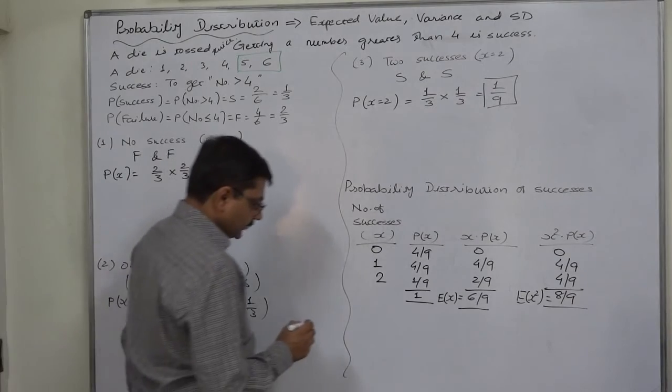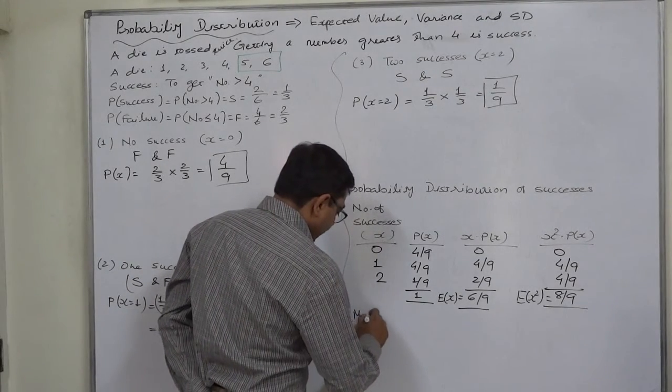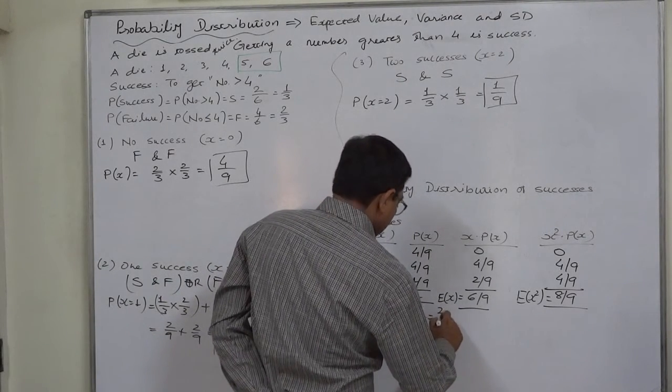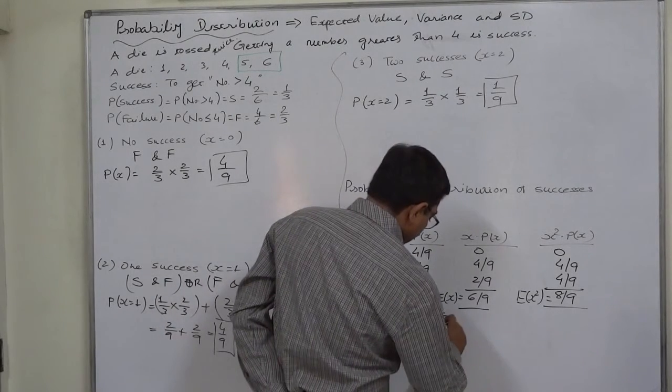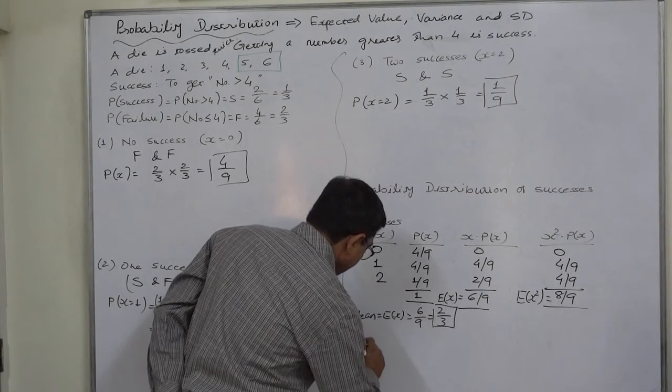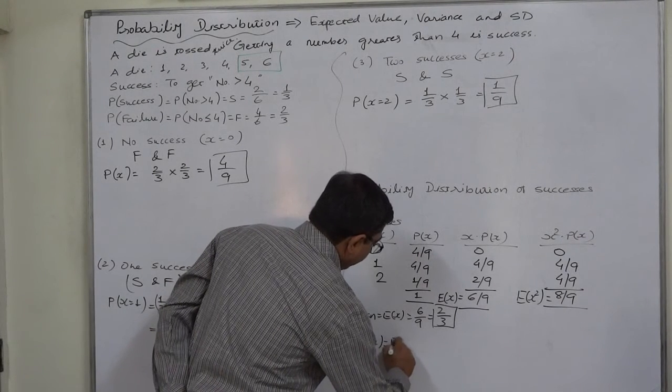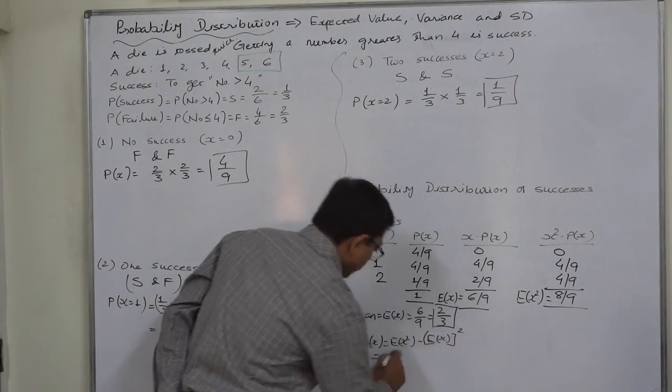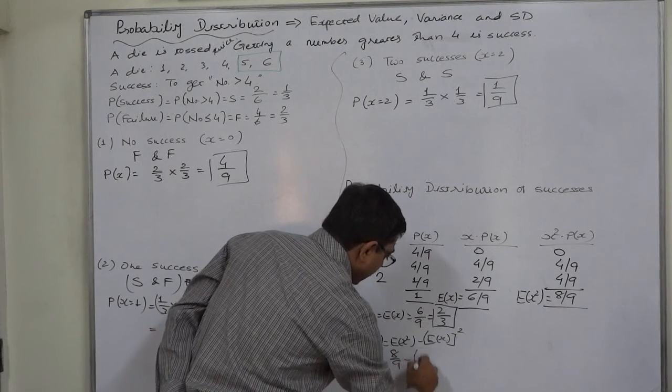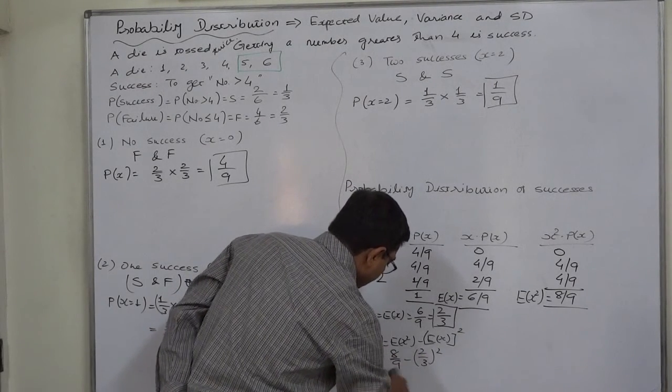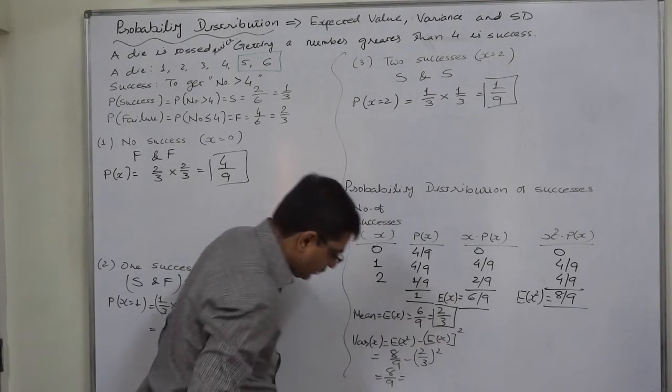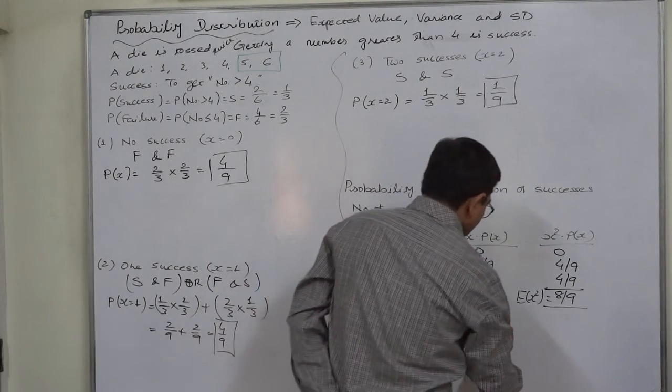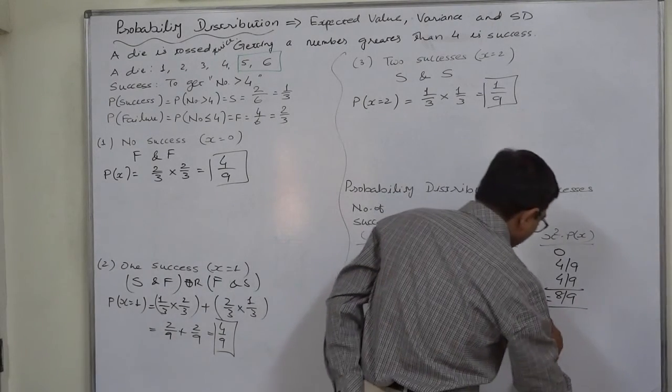Mean or E of X is 6 by 9, that is 2 by 3. Variance is E of X square minus E of X the whole square. E of X square is 8 by 9 minus square of 2 by 3, minus 4 by 9. So the variance comes to 8 minus 4, 4 by 9.